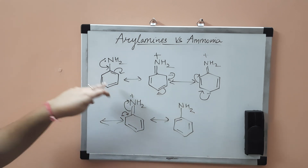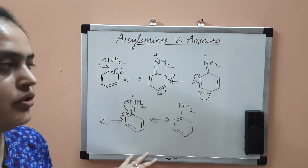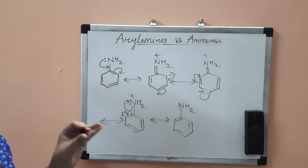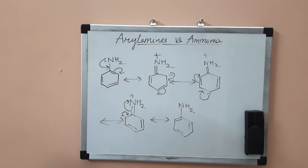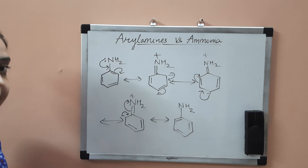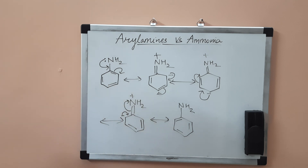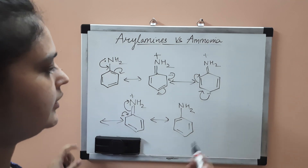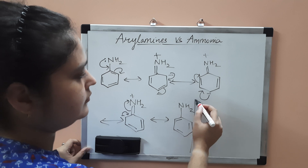So you can see that there are five resonating structures of aniline, which shows that it is a very stable molecule. If you compare it to the anilium ion — when aniline accepts a proton — how many resonating structures will it have?